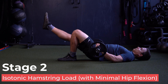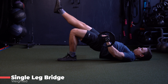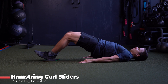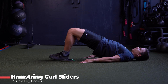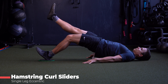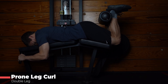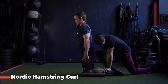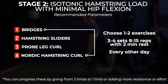Stage 2: isotonic hamstring load with minimal hip flexion. Options include a single leg bridge — progressing from no weight to weight, or double limb to single limb — a double limb hamstring slider performed eccentrically and isotonically, then single leg eccentric and single leg isotonic variations, a prone leg curl, and a Nordic hamstring curl. Pick one to two exercises to be performed every other day for three to four sets of eight to 15 repetitions — heavy, slow, and tolerable. Continue with isometrics on the other days.